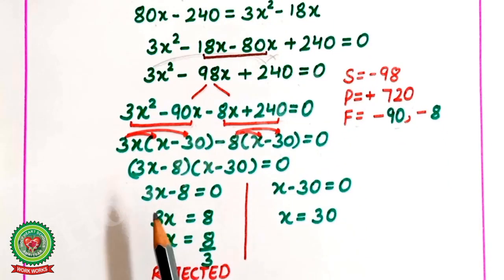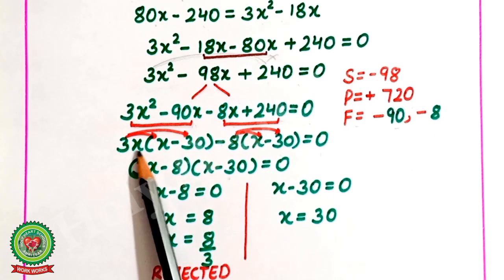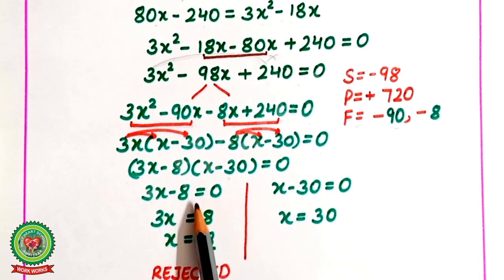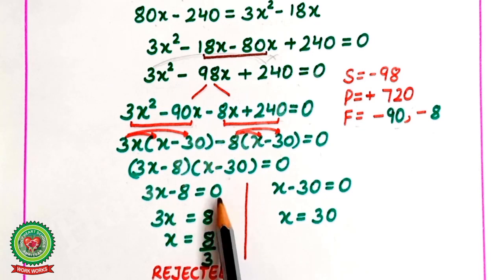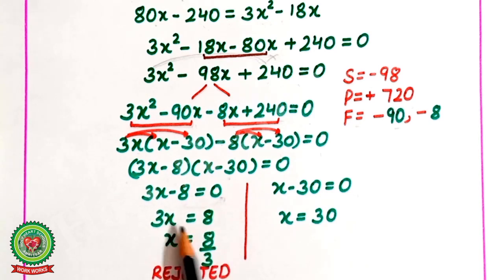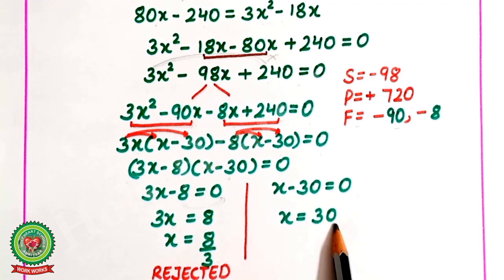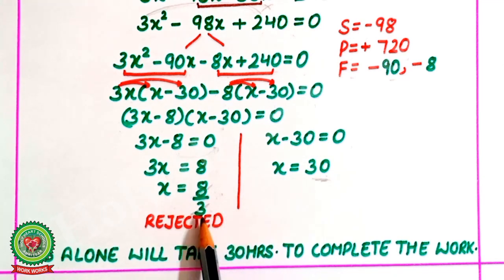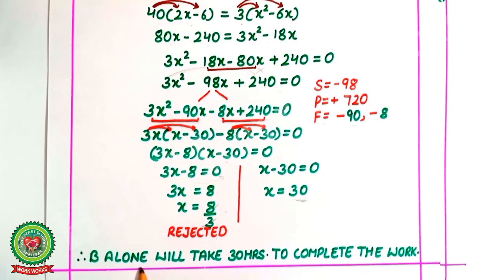So (x minus 30)(3x minus 8) equals 0. Either 3x minus 8 equals 0, giving x equals 8 upon 3, or x minus 30 equals 0, giving x equals 30. The value 8 upon 3 (approximately 2.67 hours) is rejected because A takes 6 hours less than B, which would make A's time negative — not possible. Therefore B alone will take 30 hours to complete the work.